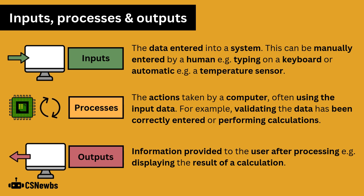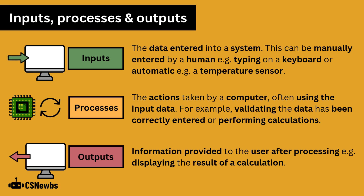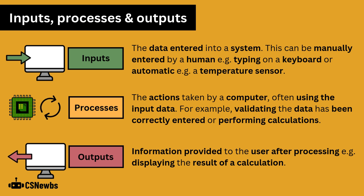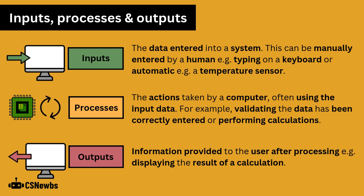Processes are the actions taken by a computer, often using the input data — for example, validating that data has been entered correctly or performing calculations. Outputs are information provided to the user after processing, for example displaying the result of a calculation.